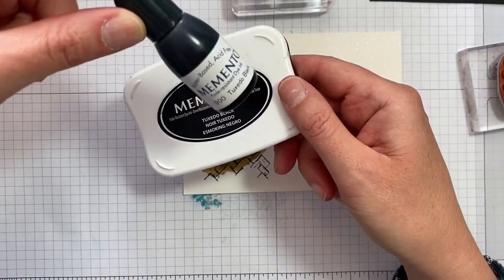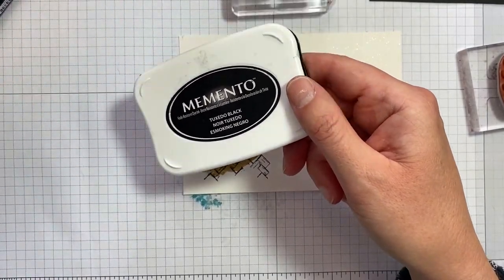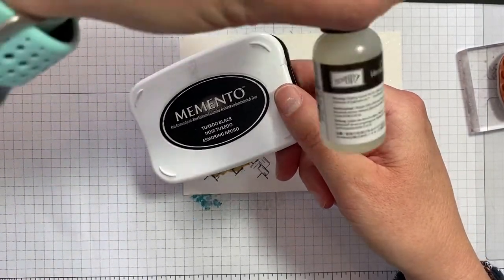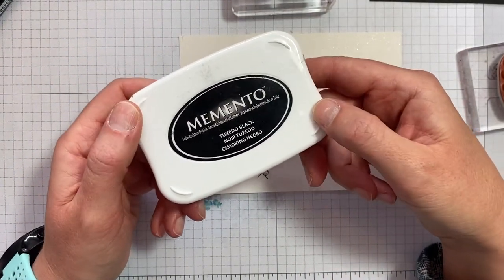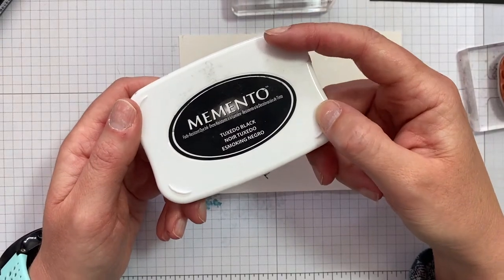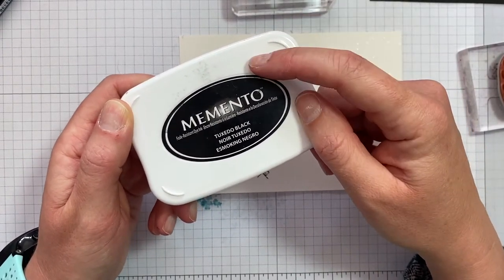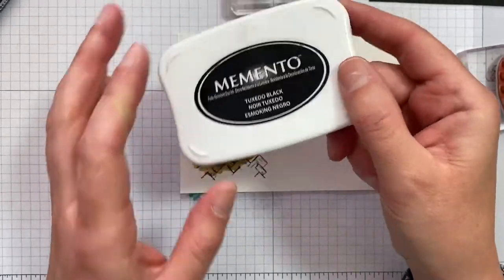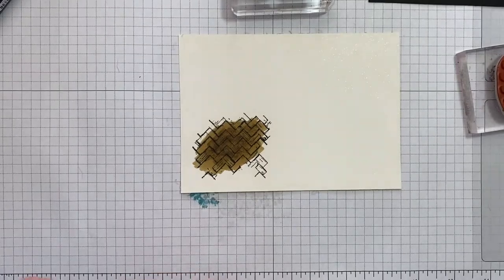It's also your go-to just for stamping sentiments in black or anything like that. Also comes with a reinker, as does Stazon. I don't think I mentioned that, did I? And Versamark. All of the inks that are available through Stampin' Up have a reinker available. So always great to buy the reinker at the same time.